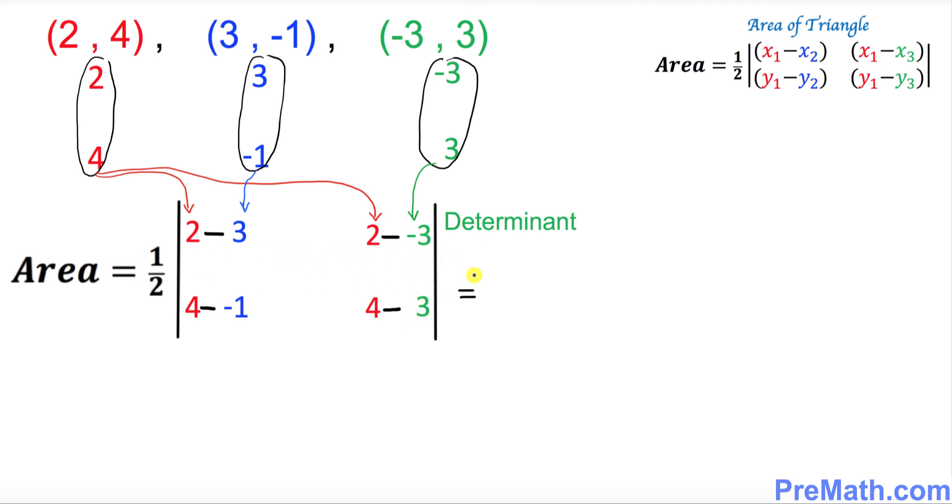Let's go ahead and simplify this. The area equals a half times—let's take care of this: 2 minus 3 is negative 1. Then we have two negative signs next to each other. Negative and negative makes positive: 2 plus 3 makes 5. Over here likewise, negative and negative next to each other makes positive, so this becomes 4 plus 1 is 5.